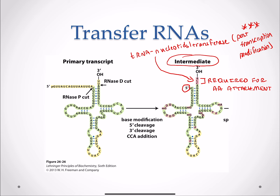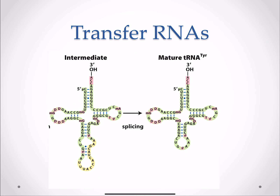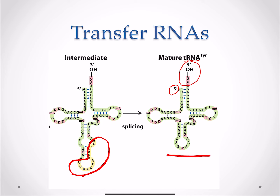This ACC addition is important for tRNA function — to bind to and bring in the amino acids. After the 3' end is fixed and the 5' end is truncated or cleaved, you have different modifications including methylation and deamination. In eukaryotes only, you also get the splicing of an intron sequence. After all of this, you're left with your mature transfer RNA.